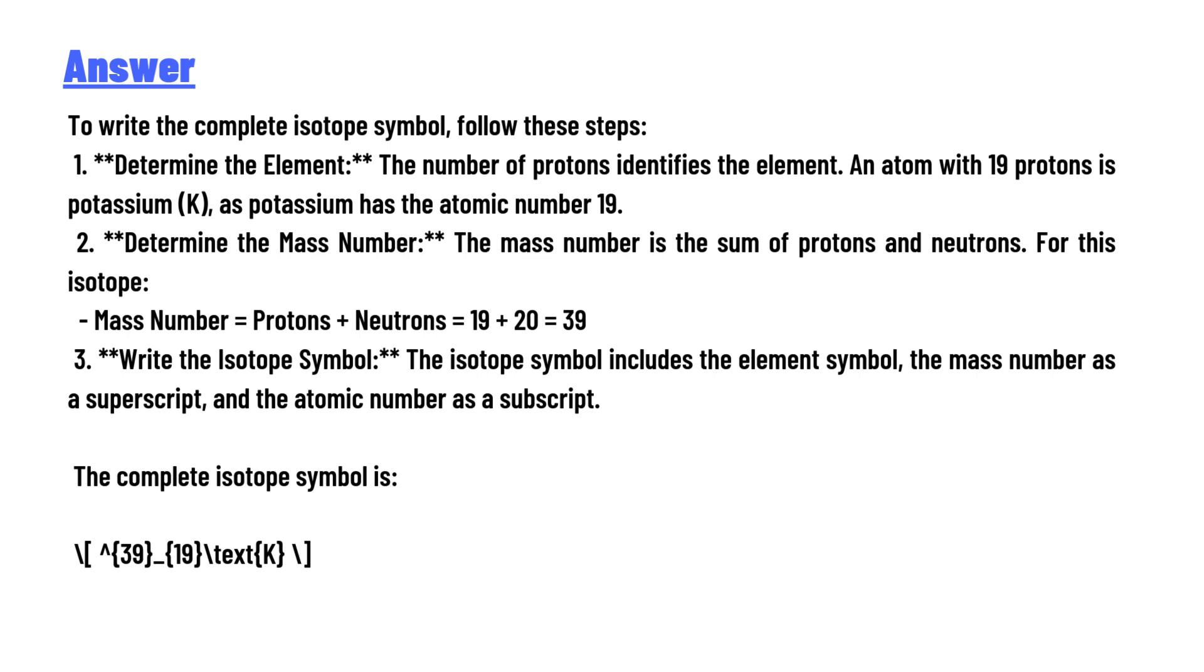Two, determine the mass number. The mass number is the sum of the protons and neutrons. For this isotope, mass number equals protons plus neutrons equals 19 plus 20 equals 39.